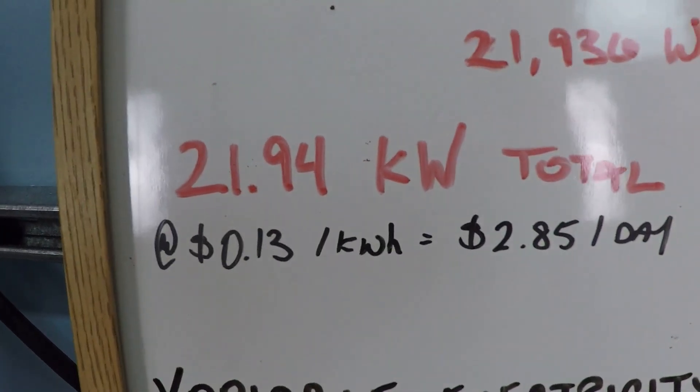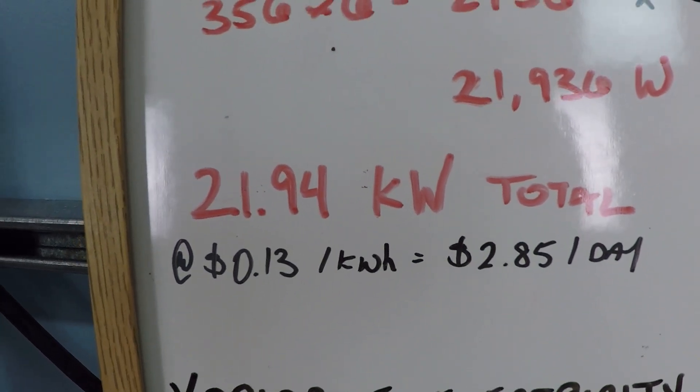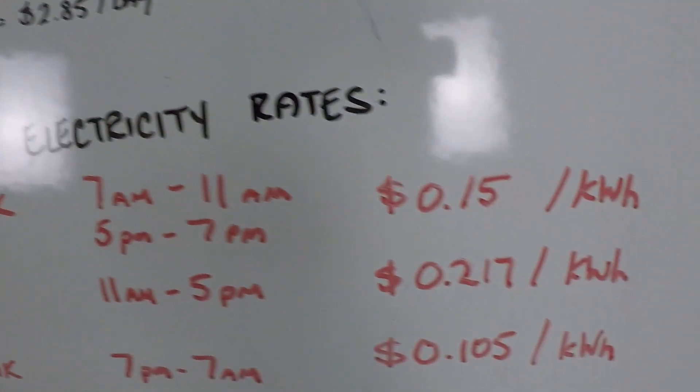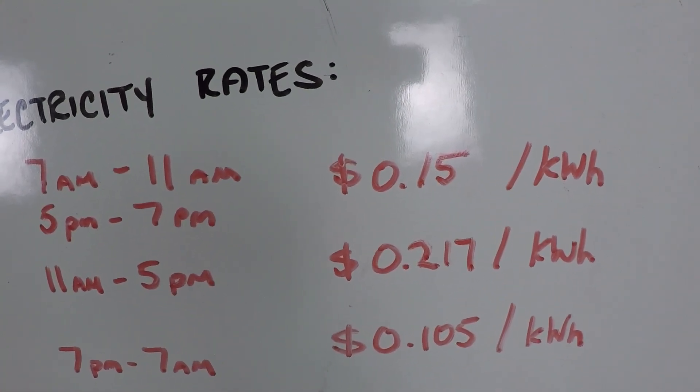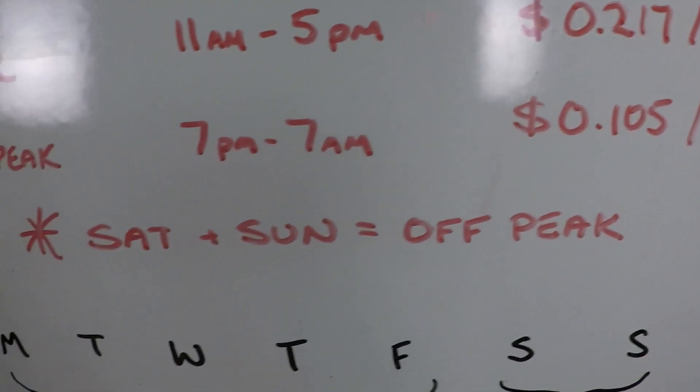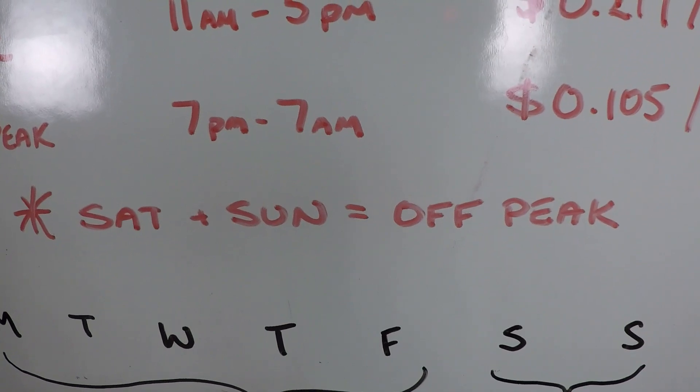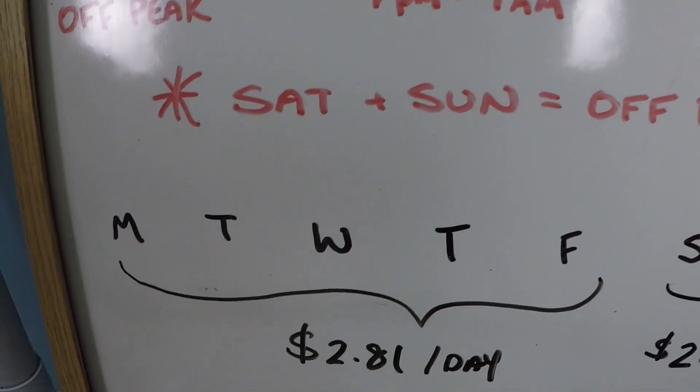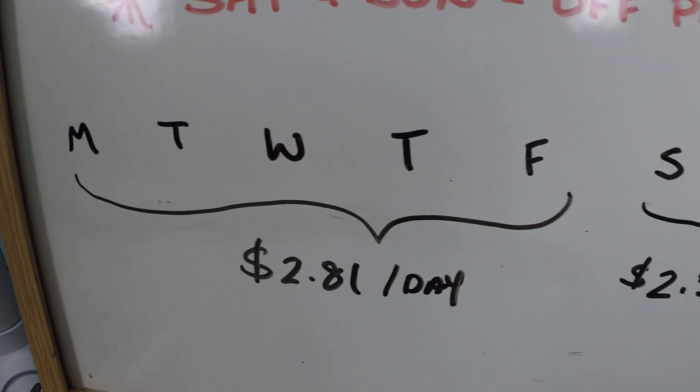The values for the rates were 15 cents per kilowatt hour, 21.7 cents per kilowatt hour, and 10.5 cents per kilowatt hour. And I even factored in that Saturdays and Sundays are entirely off peak for the entirety of the day. So during the week you were looking at $2.81 per day.